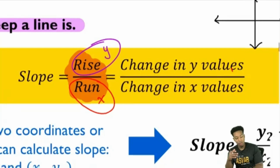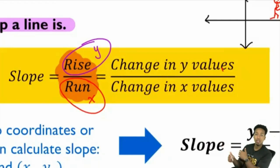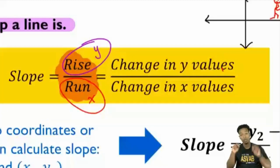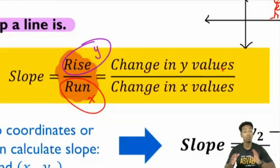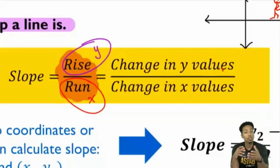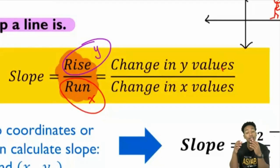Did everybody know that when you calculate slope you need two points? It's okay if you didn't know. When it comes to calculating slope you're going to be given two points, and every coordinate is made up of an x and a y.